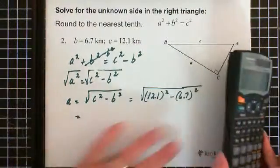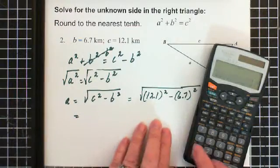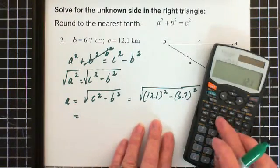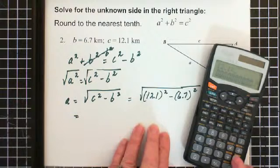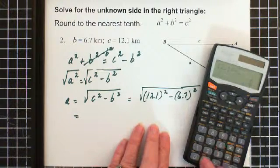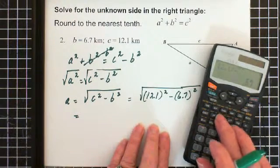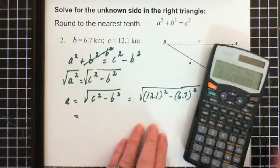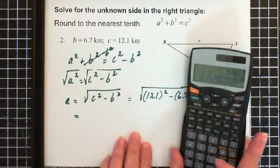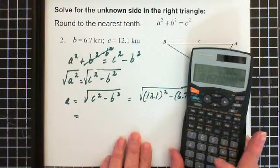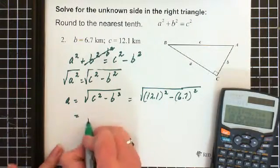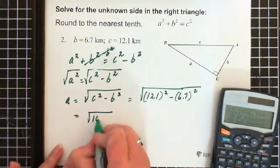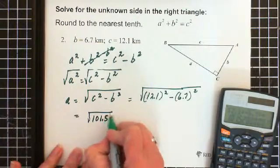So we can just go 12.1² - 6.7² equals. That gives you the number under the square root sign, which is 101.52. So we have the square root of 101.52.